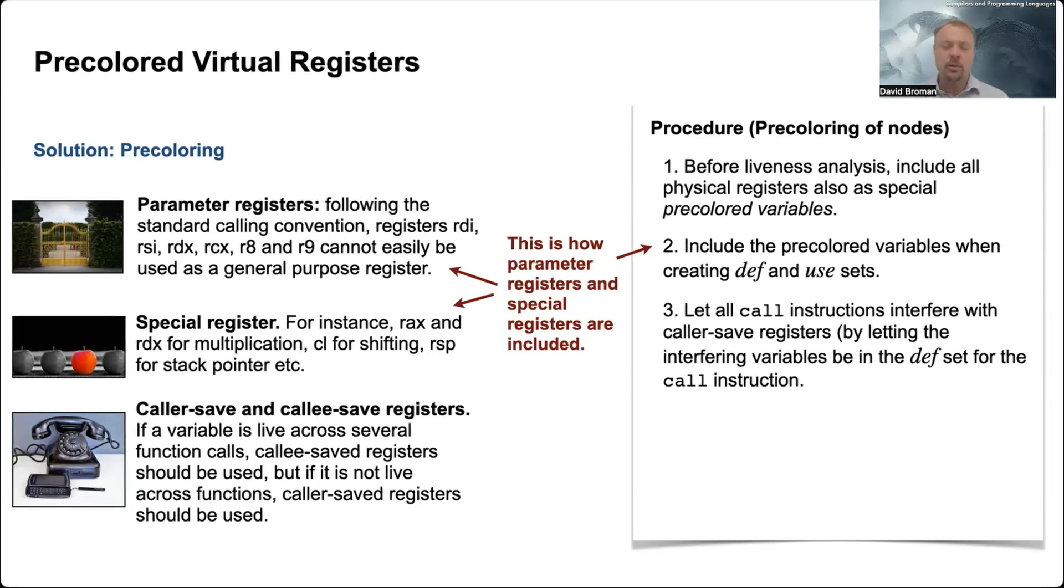Also, when we are calling things, we need to make sure that some of these callee-saved registers are interfered. And you can also use the defsets to do that, to mark that these variables are actually dependent on them. And you can use the defsets to encode this constraint as well.